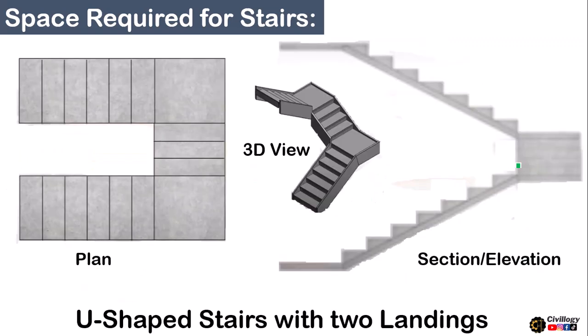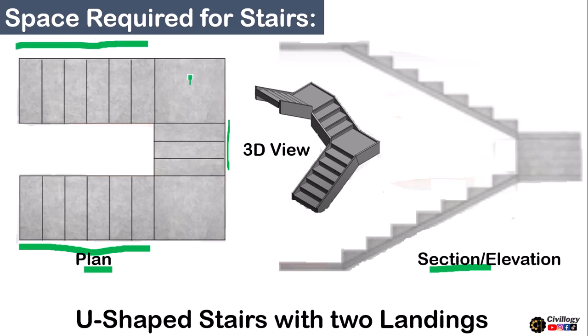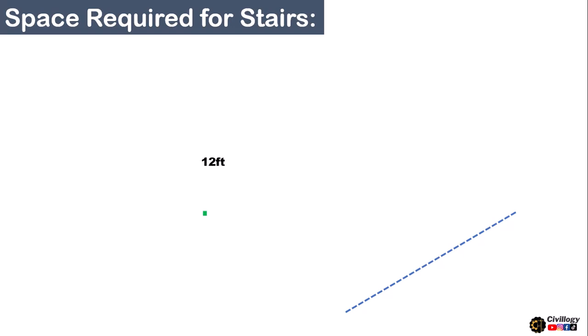So, we are discussing the U-shaped staircase with two landings. This is how it will look — this is the plan of the staircase, and this is the section or elevation of the U-shaped staircase with two landings. There are three number of flights: flight number 1, flight number 2, and flight number 3, along with two number of landings. Now let's proceed towards the calculation.